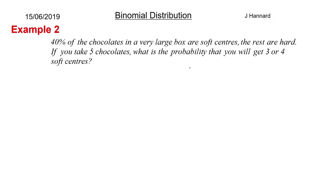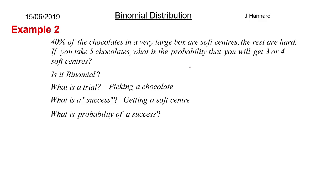Example two. 40% of chocolates in a very large box are soft centers, the rest are hard. If you take five chocolates, what's the probability you will get three or four soft centers? Is it binomial? What is a trial? Well, the trial is picking a chocolate. What is a success? Getting a soft center. What is the probability of that success? 40%, which is 0.4. Are the trials independent? Yes. But it's a very large box. Technically no, because if you take one chocolate you're making it more likely that somebody's going to get the other type of chocolate. But we're going to say it's an extremely large box so we'll say there's thousands of chocolates in there. So you taking one isn't really going to affect anything. So yes, they're independent for the sake of the question.